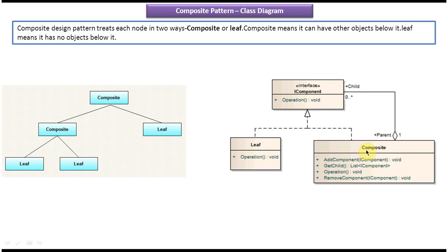As explained, composite can have other objects below it, so it has methods to add and remove objects. You can see the add component method — you pass the component and it will be added to the composite object. Similarly, you can remove a component using the remove component method. The composite object also provides an implementation of the operation method defined in IComponent.